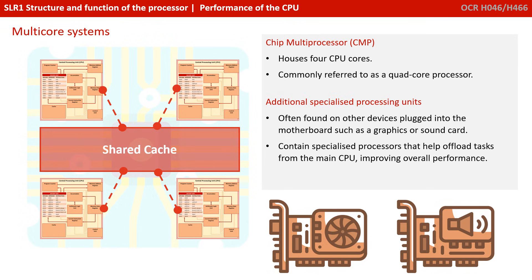The efficiency of the main CPU can be further enhanced by offloading some of its tasks to other, more specialised processors. Most modern computers — especially PCs dedicated to gaming and gaming consoles — will have separate graphics cards and sound cards, each with their own processors. These are highly specialised forms of the CPU, designed to excel at processing instructions related to graphics and sound. By offloading these tasks to these processors, the overall performance of your main CPU can be improved significantly.